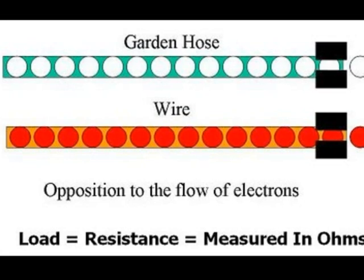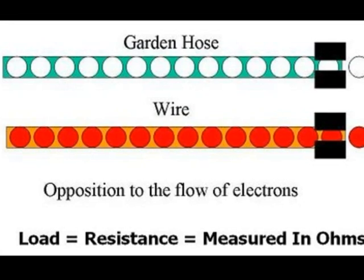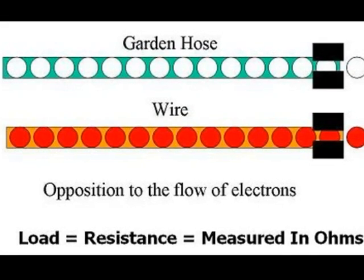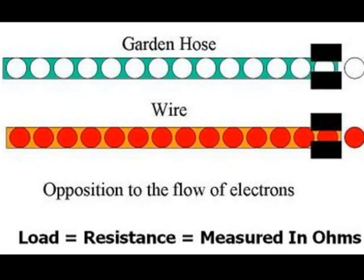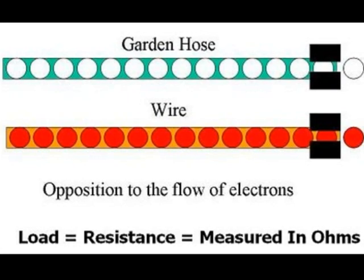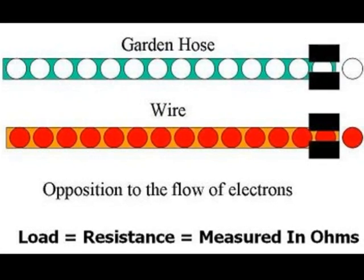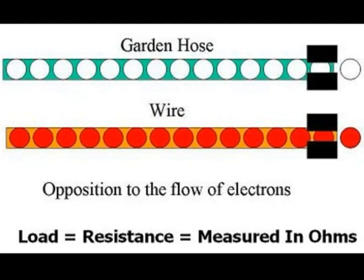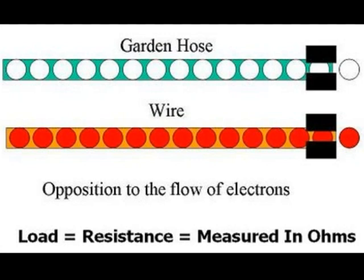Ohms is the amount of resistance. The higher the resistance, the harder it is for that flow of electrons to get through the path.